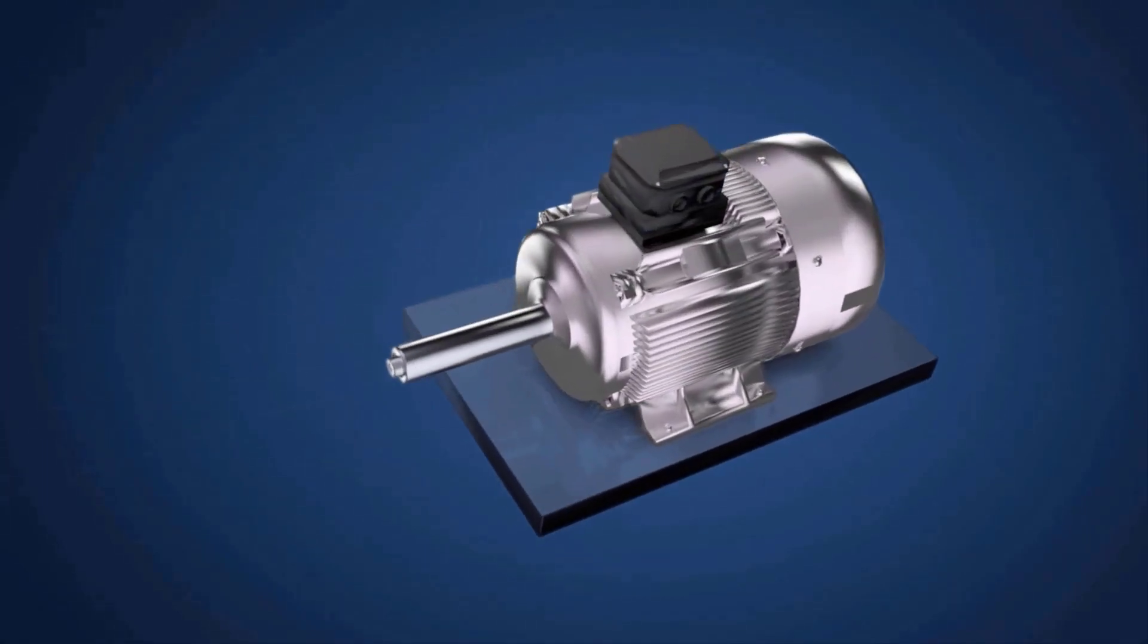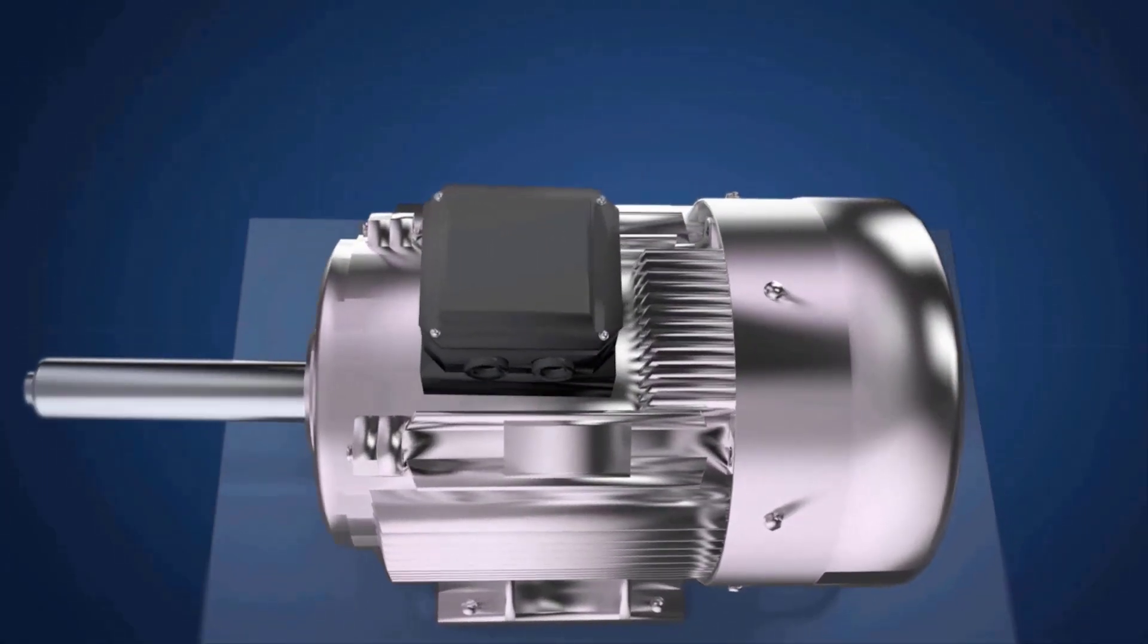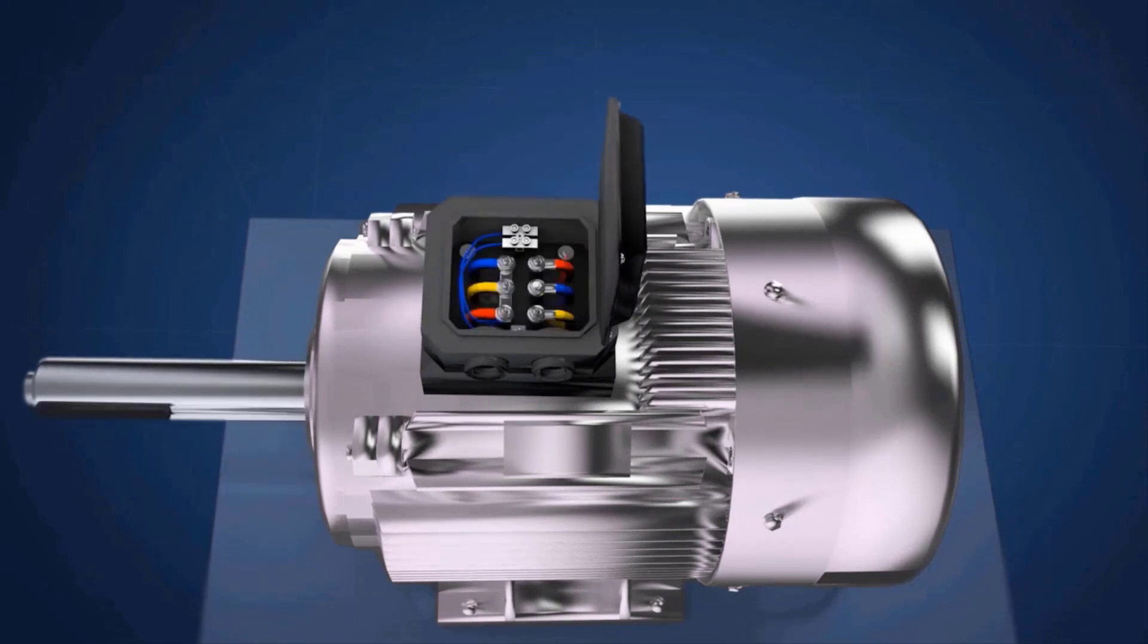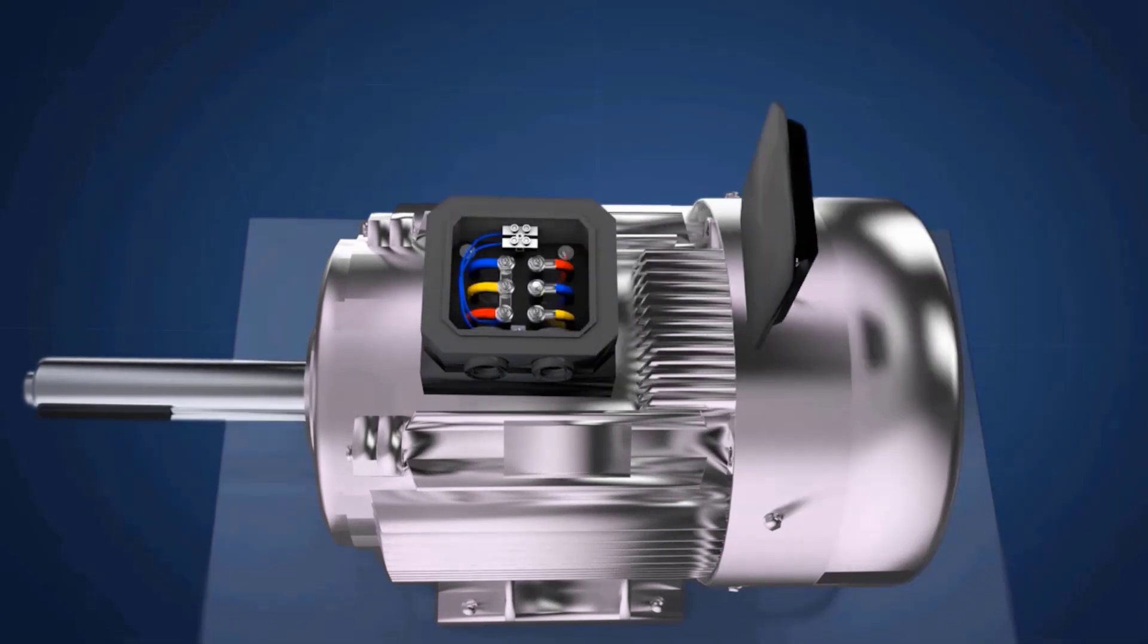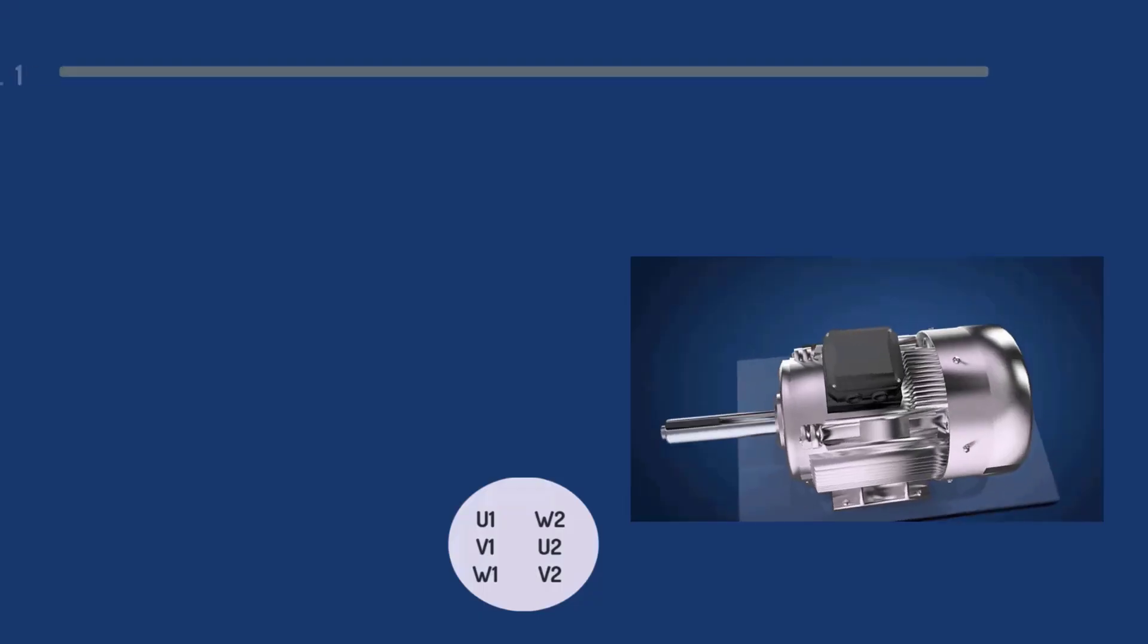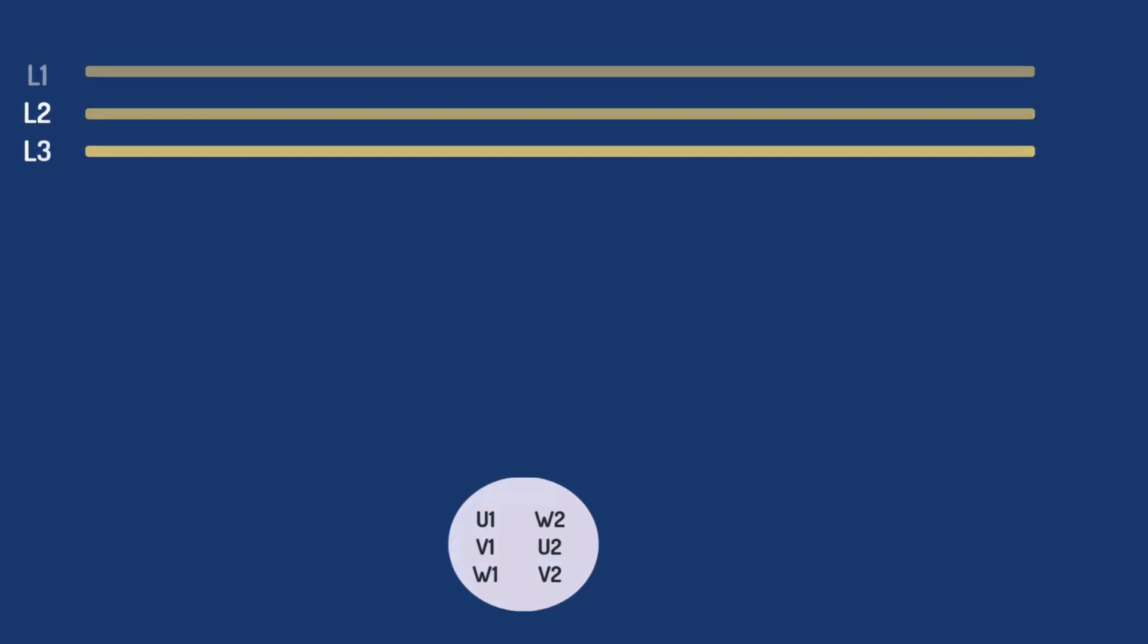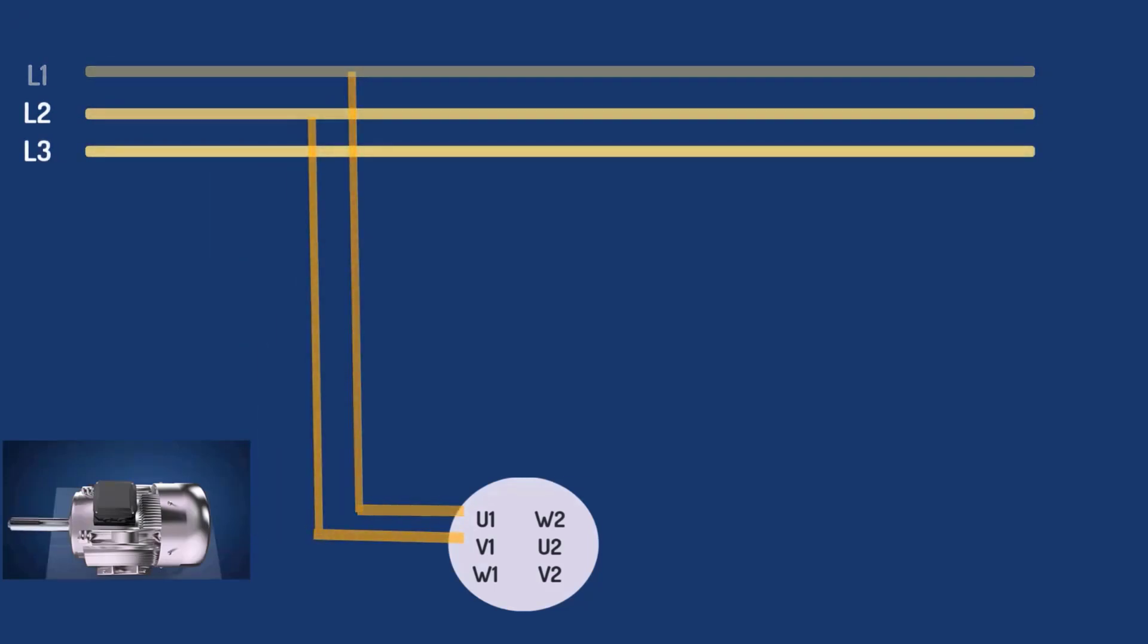It's important to see what's inside the terminal box of a motor. When we open the motor terminal box, you will see six terminals inside. To run the motor, we need to connect three-phase power supply to motor terminals: L1 will be connected to U1 terminal, L2 to V1 terminal, and L3 to W1 terminal.